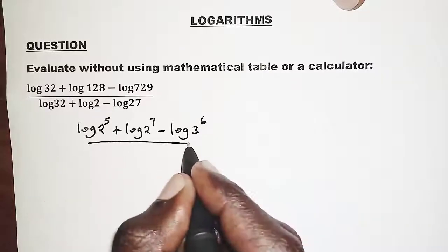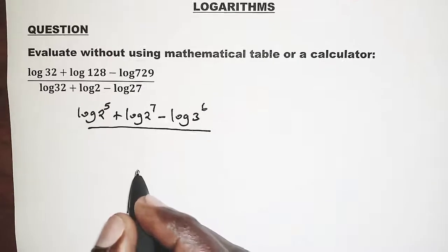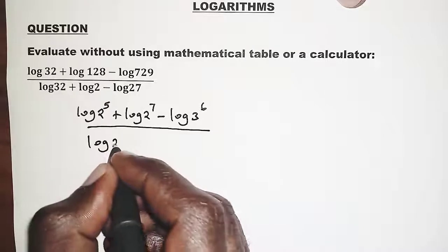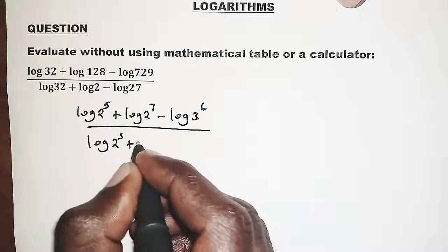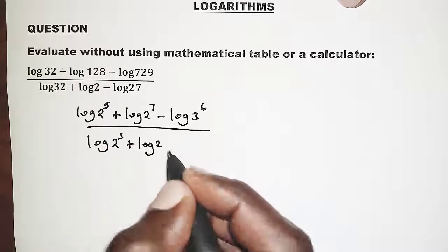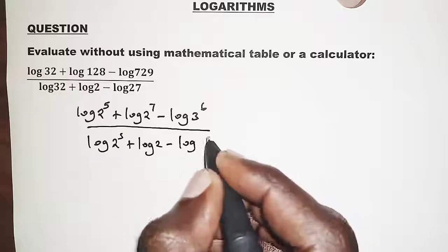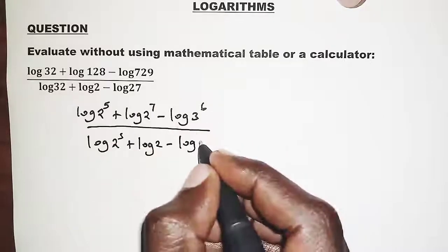The same also should be done on the denominator. We have logarithm of 32, 32 is 2 power 5. Plus logarithm of 2, that is already simplified. Minus logarithm of 27, and 27 is 3 cubed.